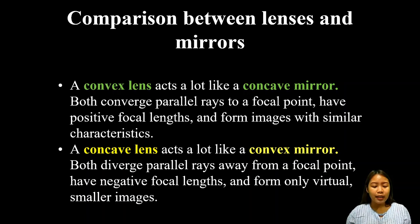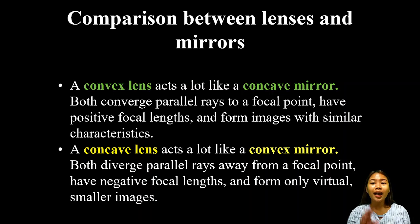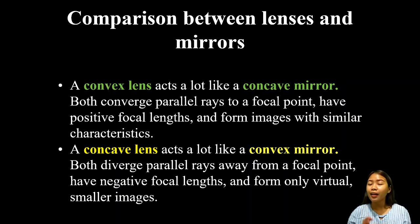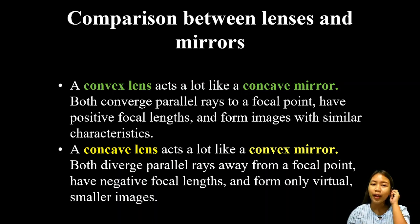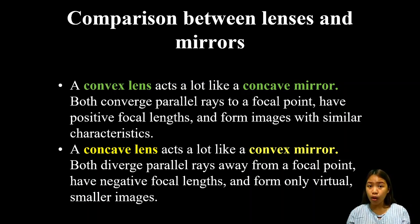For the concave lens and convex mirror, they are both similar in that they diverge light rays — they scatter and spread the light rays. They both have a negative focal length, and they form only virtual and smaller images.